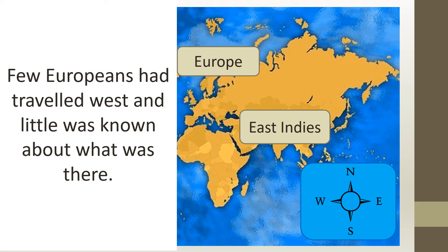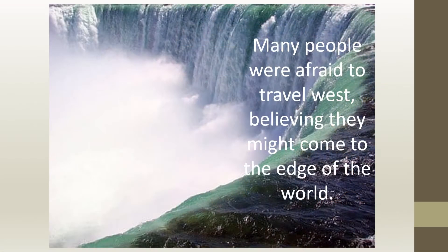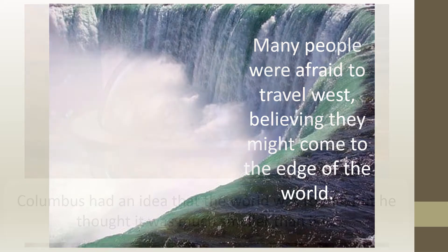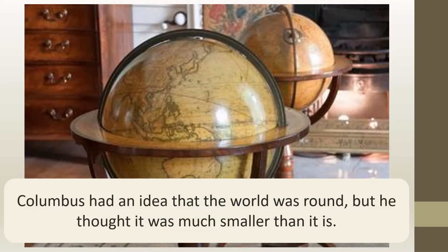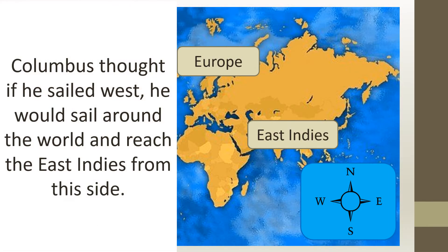A few Europeans had travelled west and little was known about what was there. Many people were afraid to travel west, believing they would come to the edge of the world. Columbus had an idea that the world was round, but he thought it was much smaller than it is. Columbus thought that if he sailed west he would sail around the world and reach the East Indies from this side.